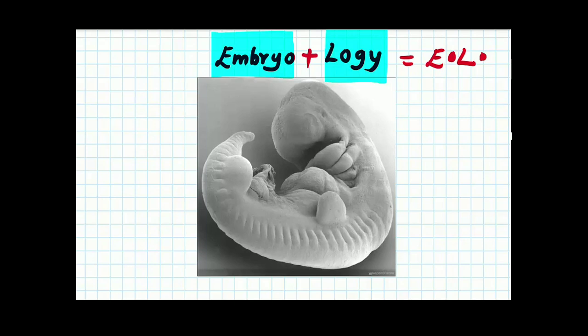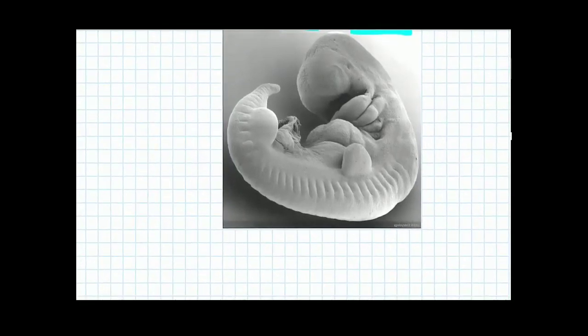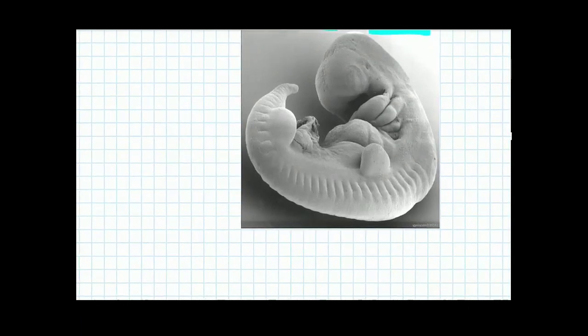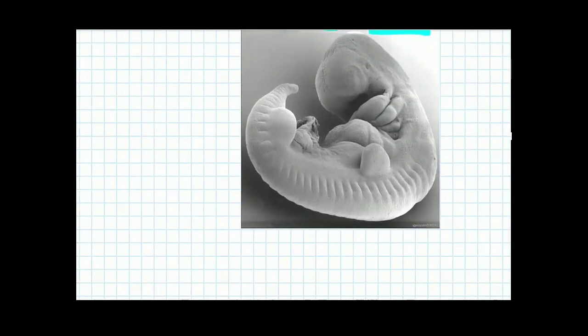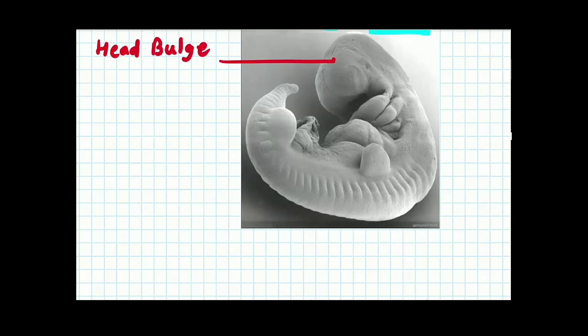Now try to understand what are the various important structures visible in a typical embryo. There is one elevation on the uppermost part. This uppermost elevation is known as head bulge. Kindly prepare your notes along with these images. This head bulge part, why it is known as the head bulge? Because inside this head bulge there is the development of the brain. That's why it is known as the head bulge.